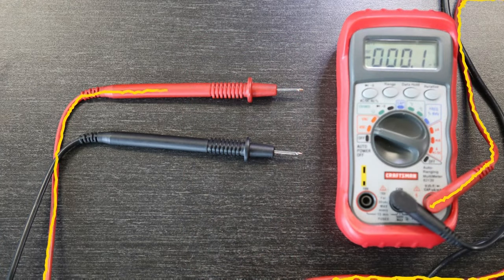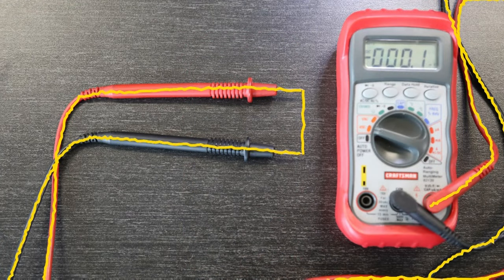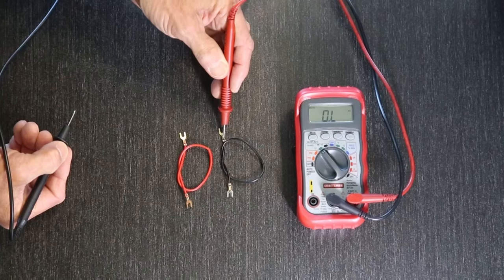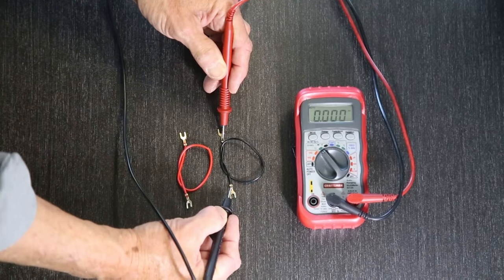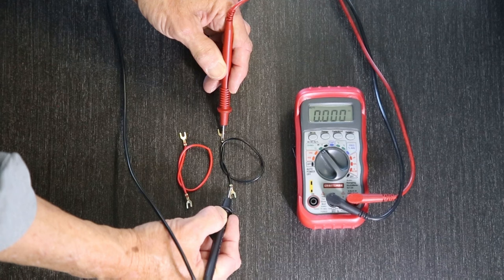The multimeter sends out current through the red probe, and uses the black probe to complete the circuit. Touch the red probe to one end of the wire, and the black probe to the other. The meter shows all zeros, which means the wire correctly creates a circuit between the two probes, and there's no resistance. The wire is good.